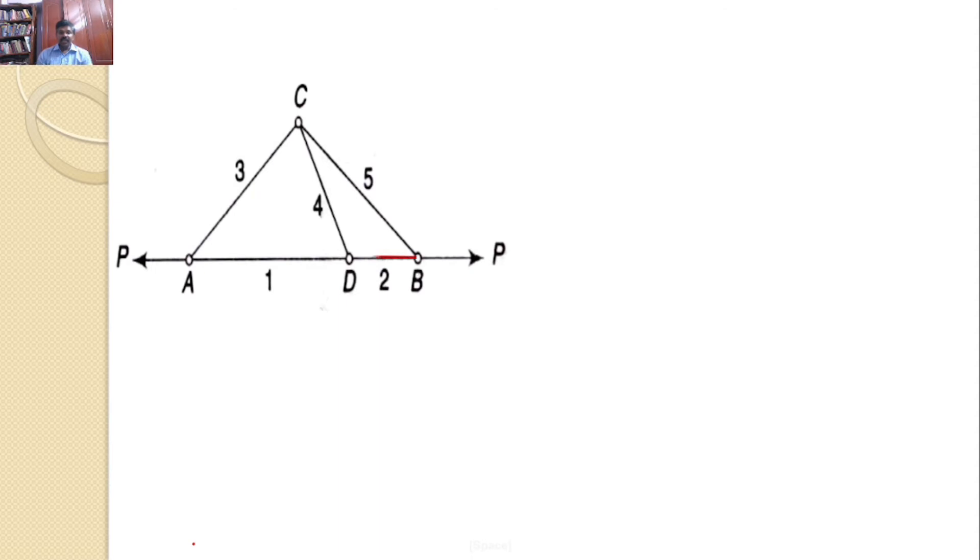Let us consider the free body diagram at B. There are, once again, three forces. One is the force in bar BD. Let this force be S2. Next force is the force in bar BC. Let this force be S5. Next force is the applied force P. Let us transfer all these three forces onto a separate XY plane.